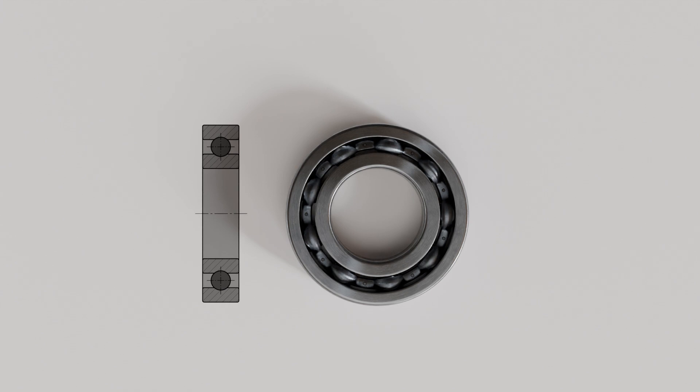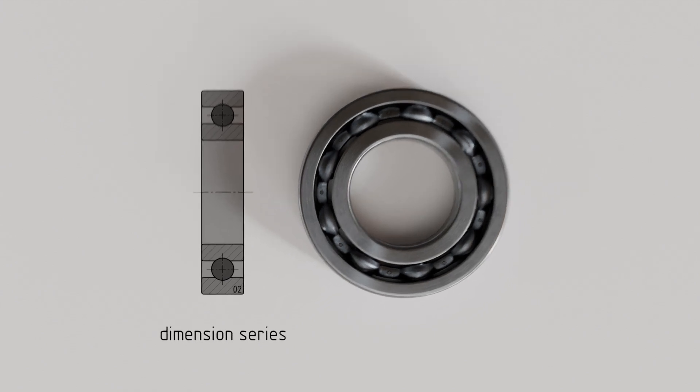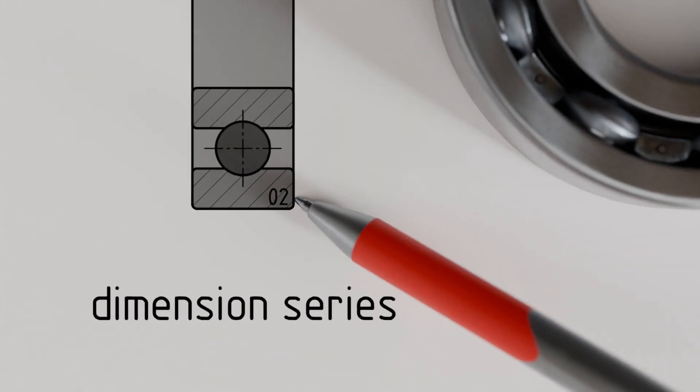Let us examine the structure of the dimension series system more closely using the example of the illustrated radial deep groove ball bearing. It belongs to dimension series 0-2.